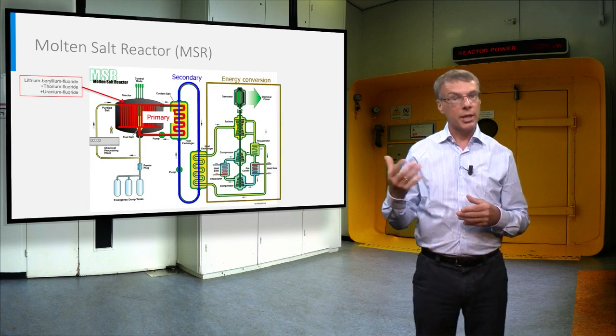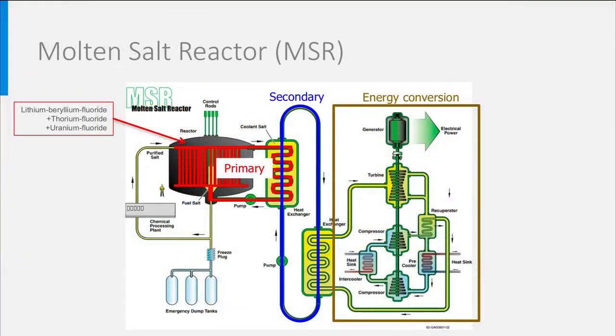In the intermediate loop, indicated in blue, the heat is transferred to the energy conversion system to produce electricity or process heat.